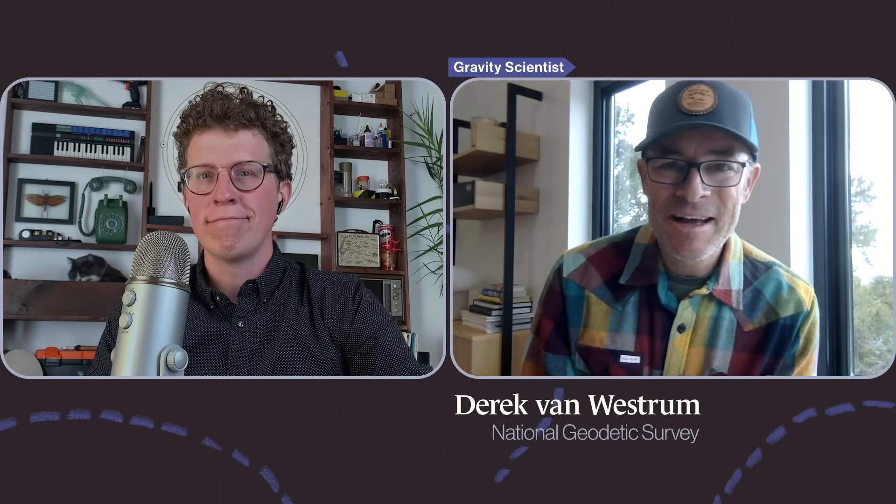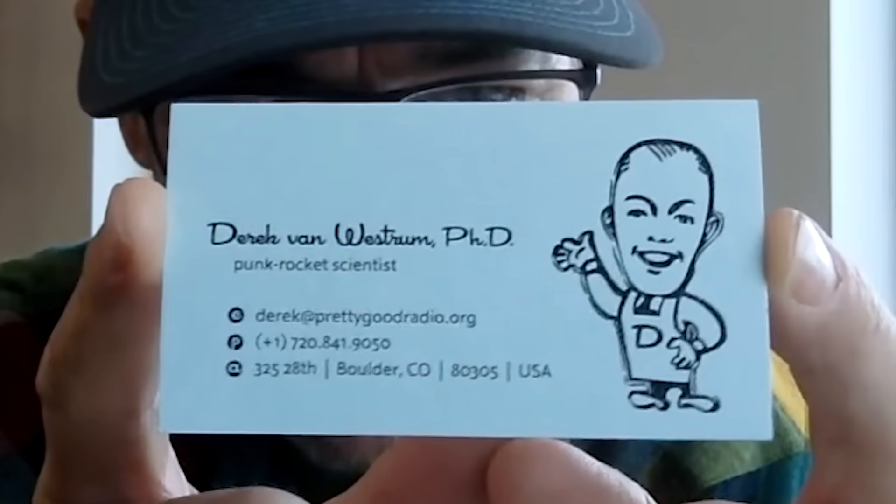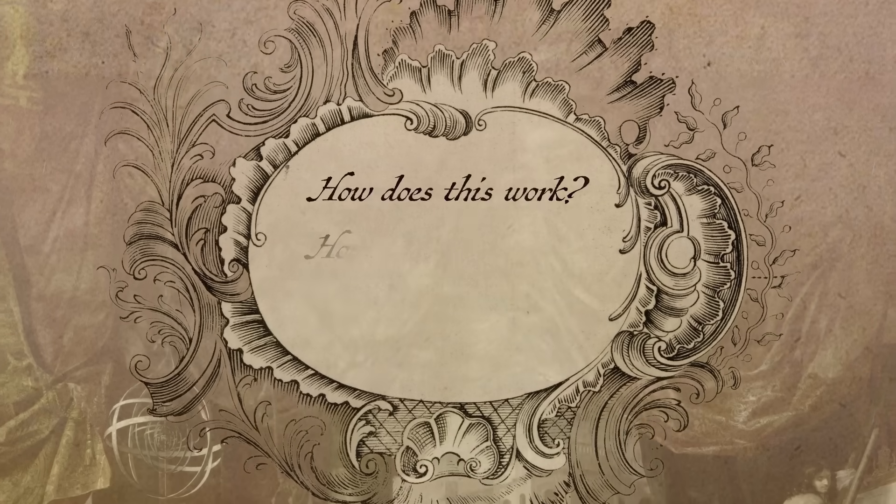My name is Derek Van Wester, I'm a physicist at NOAA's National Geodetic Survey, and I map out exactly how not-round the Earth is. This is my real business card. Poke Rocket Scientist. When Derek was in college, he played guitar in this band. A bunch of us had this band. There's this complete disregard for any kind of authority. The part of that, though, is I want to find out for myself how the world works. How does this work? How does that work? I want to dig in on this.